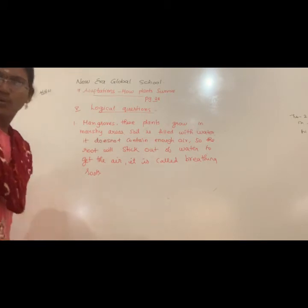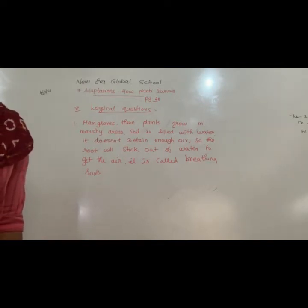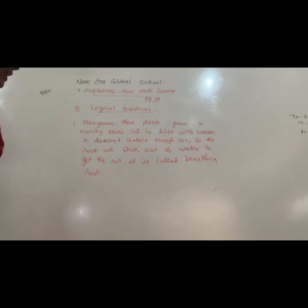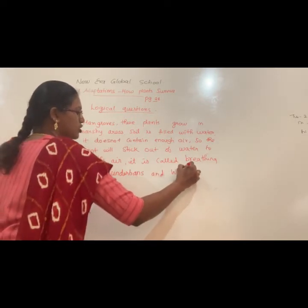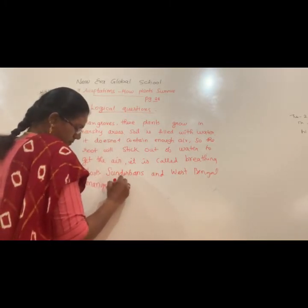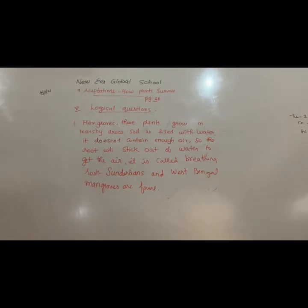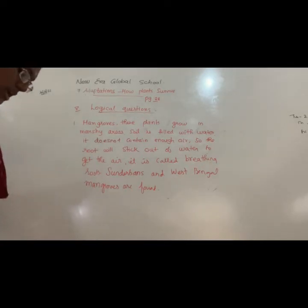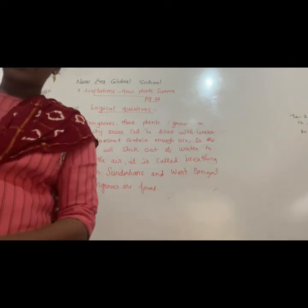I am telling the answer again. Roots are the parts of the plant that grow below the ground. Can you think of a place where the roots grow above the ground? Mainly in the Sundarbans area, West Bengal, mangroves are found. The answer is mangroves. These plants grow in marshy areas where the soil is filled with water and does not contain oxygen, so the roots stick out of water to get oxygen — it is called breathing roots. In Sundarbans and West Bengal we can see mangrove trees.